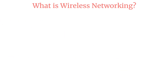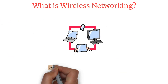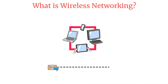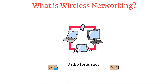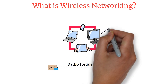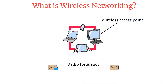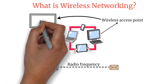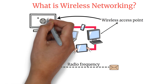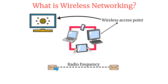Wireless networking allows devices to connect to a network without using cables. Instead, it uses radio frequency waves to transmit data. Your devices — like phones, laptops, or smart TVs — connect to a wireless access point, which is often built into a router. That access point then connects you to the wider network, or the internet.